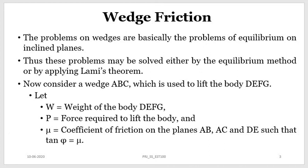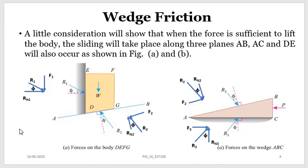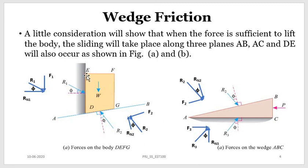If we draw the free body diagram of the system and consider the block which is to be lifted, the weight W acts in the downward direction. When we apply a force on the wedge, the block moves upward, so the frictional force F1 on the vertical plane acts in the downward direction. Since there is a point of contact between the vertical surface of the block and the wall, there is a normal reaction Rn, and R1 is the resultant of this frictional force and the normal reaction.